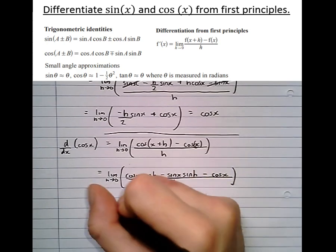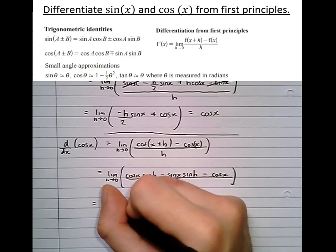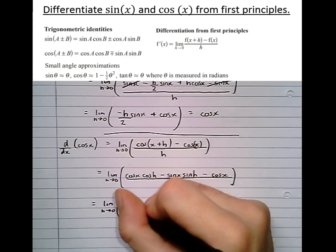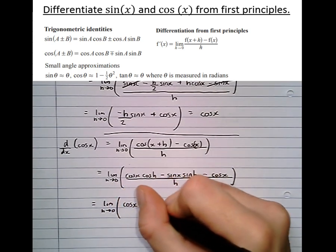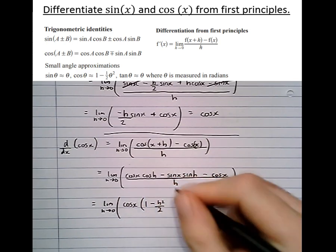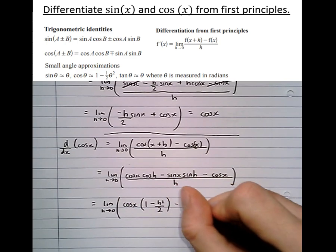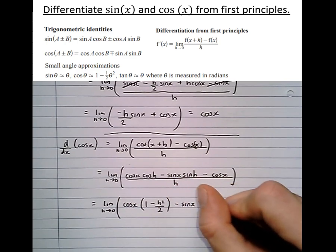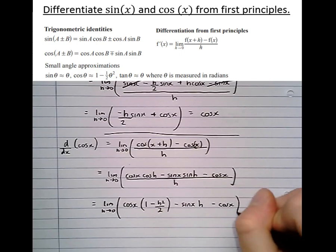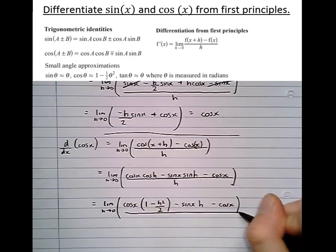Again noticing that h is small, so we're going to use the small angle approximations. That becomes cos x times (1 minus h squared over 2) minus sin x times h, take cos x, all over h.